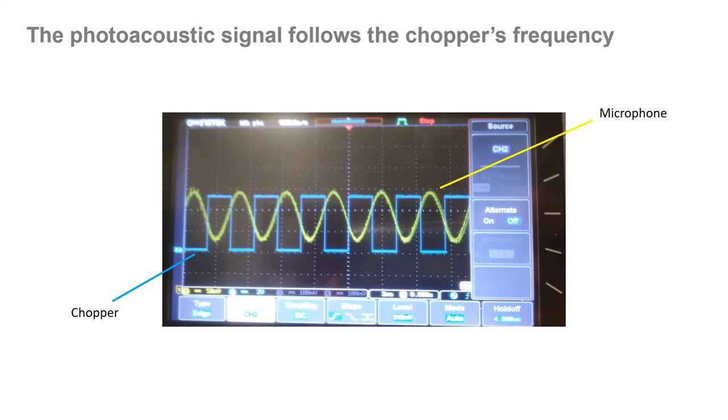When done in the lab, the photoacoustic signal can be seen at the oscilloscope in yellow, which closely follows the chopper frequency of 350 hertz in blue. After passing through the lock-in amplifier, the signal is just transformed to a constant current value in millivolts.